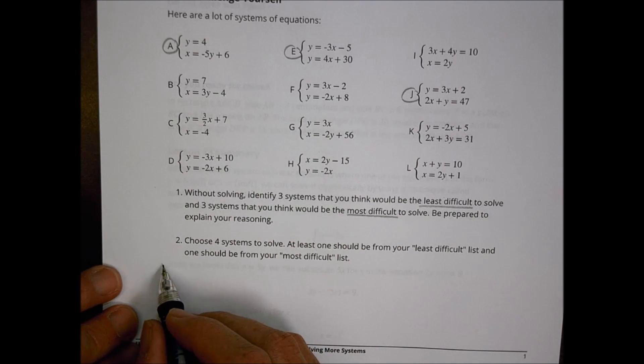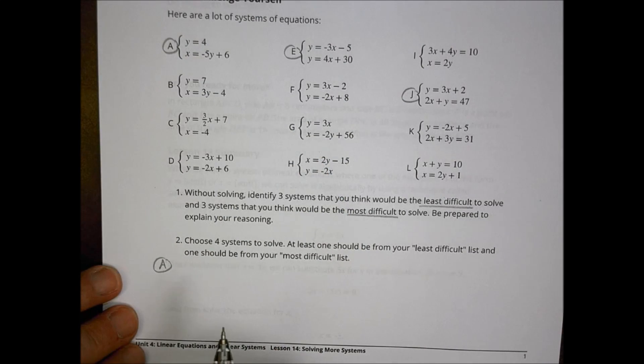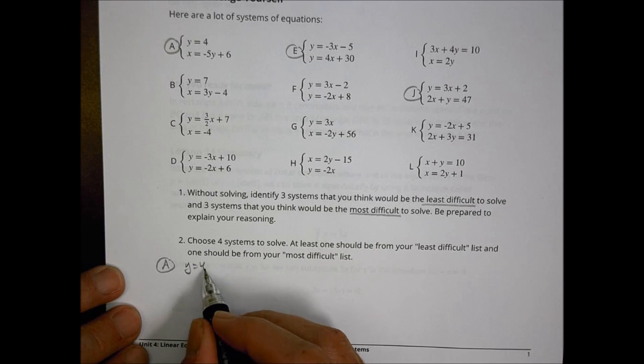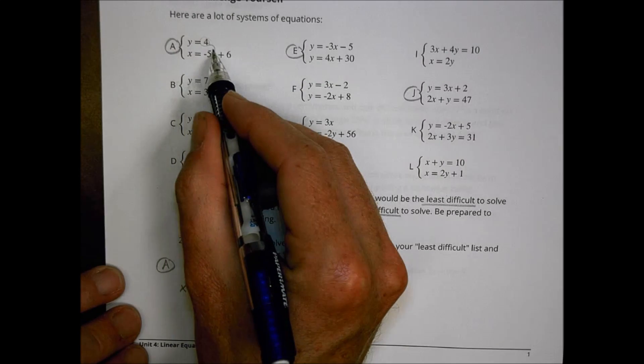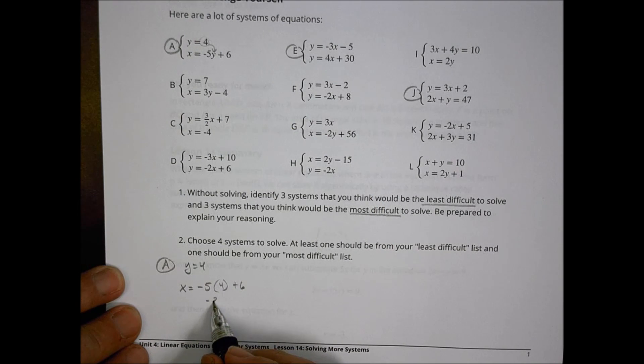So, let's take a look at A first of all. With A, I recognize that it already gave me the value of y. This is one of my easy ones. Y equals 4. All that's left is to find the value of x. So x is going to be equal to negative 5 times the value of y. I just have to replace the y with a 4. So I have 5 times 4 is negative 20 plus 6 gives me negative 14 is what x is equal to. That was pretty straightforward, negative 14 comma 4.